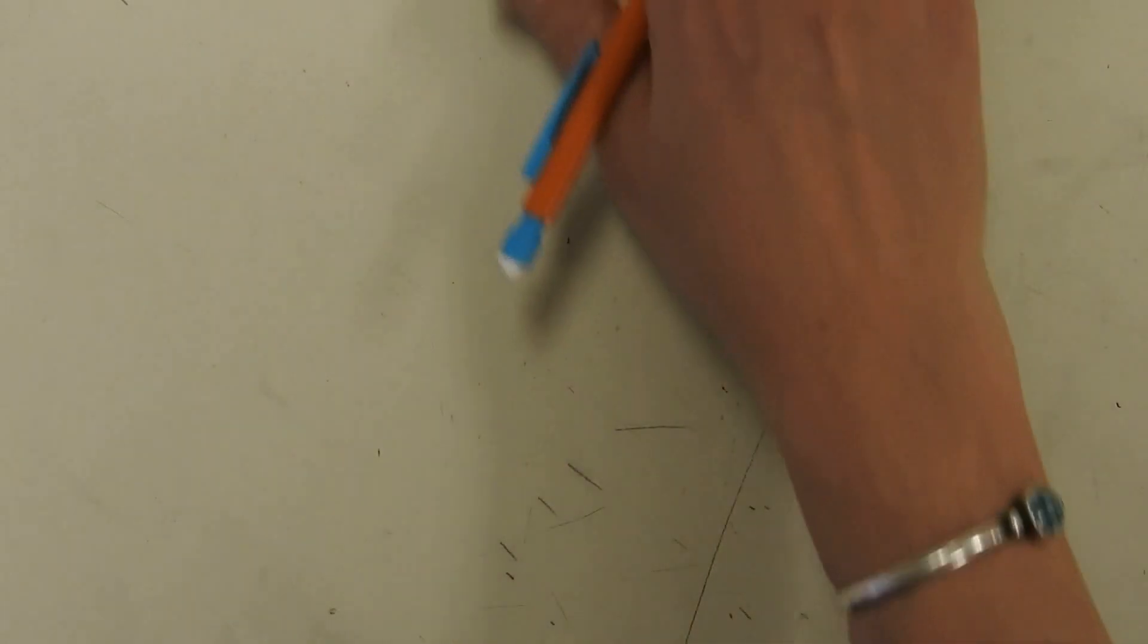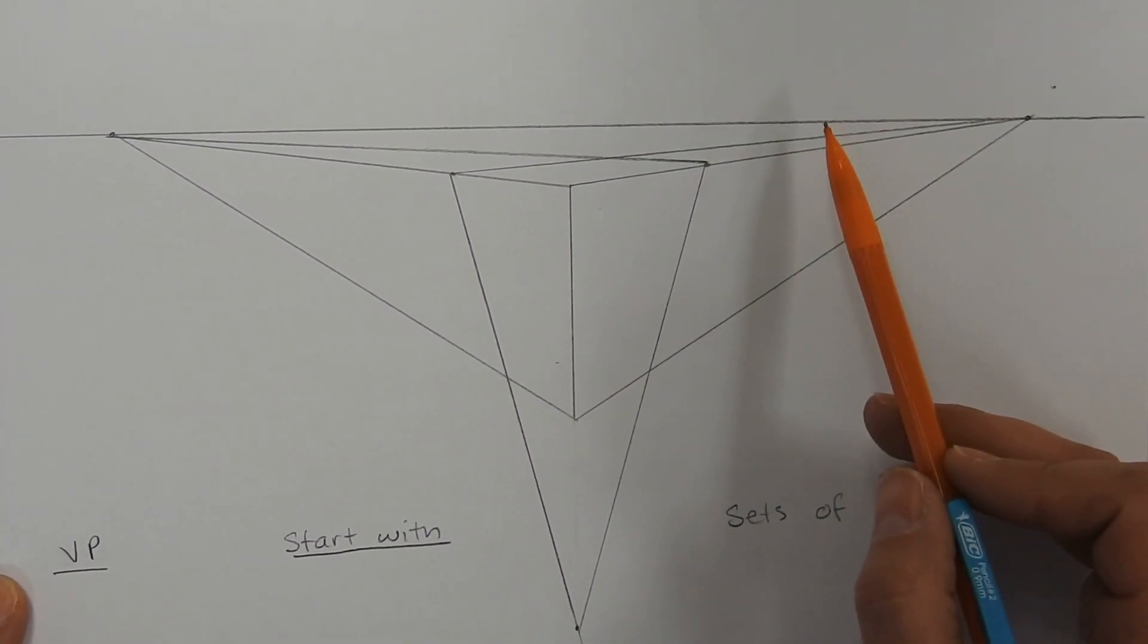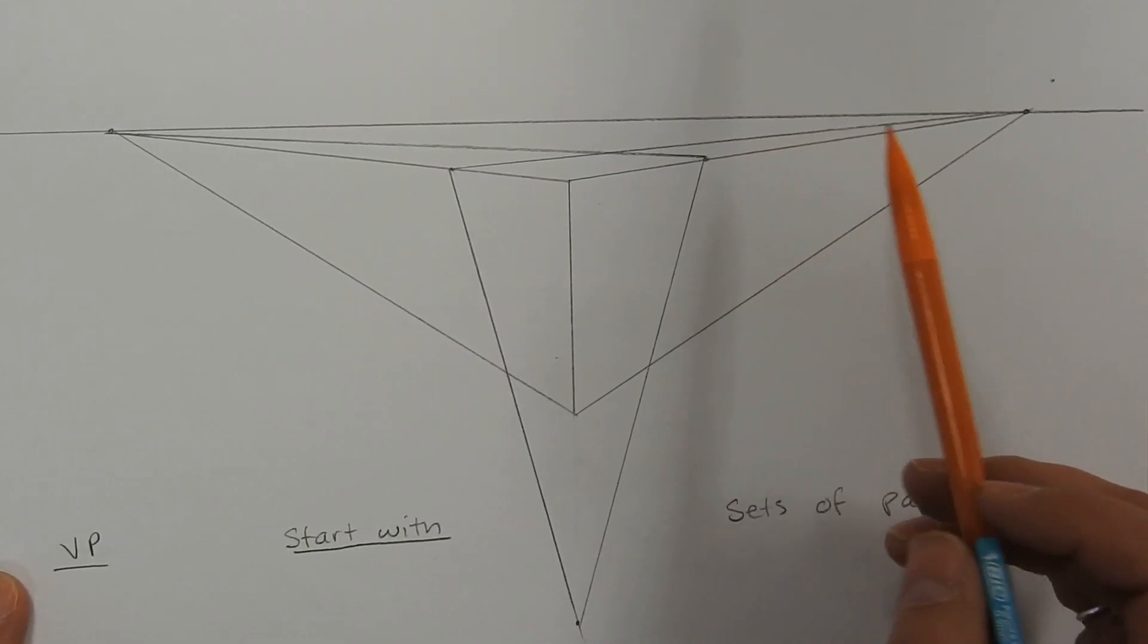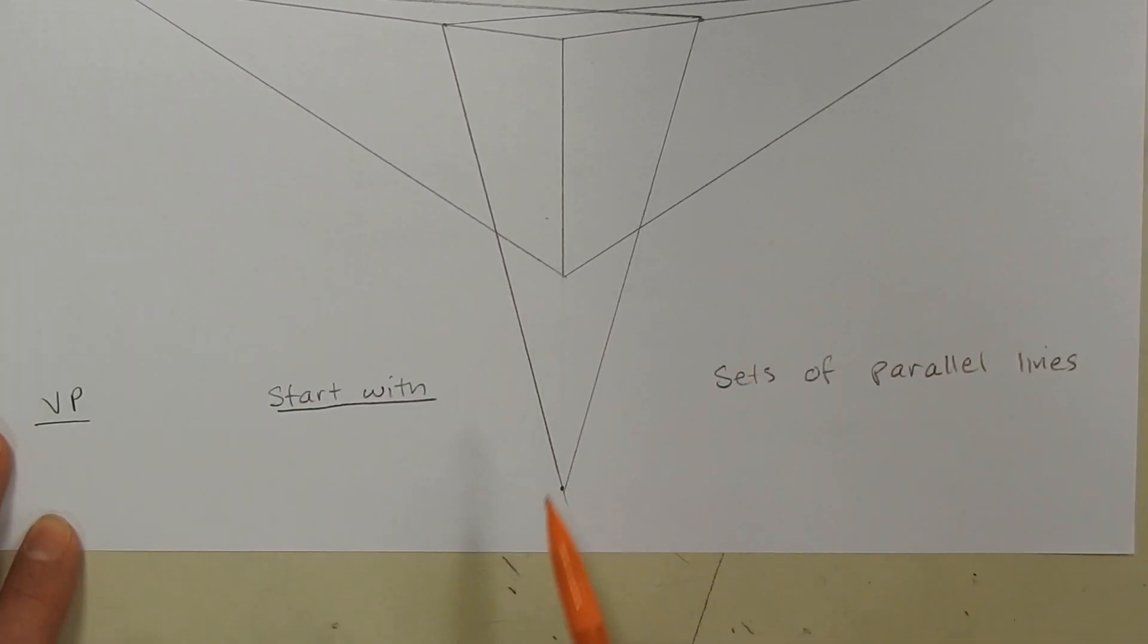Now if we look at three point, again you're going to start with a horizon line. But you're going to have three vanishing points: one, two, and three.